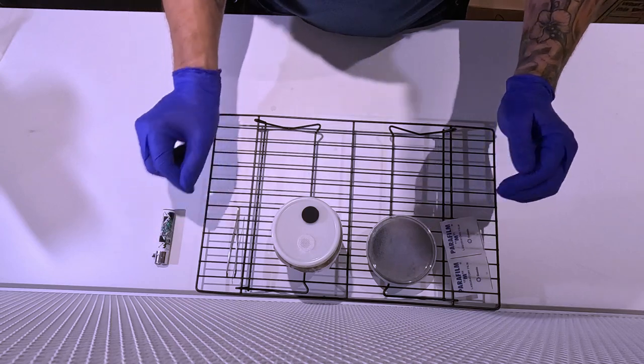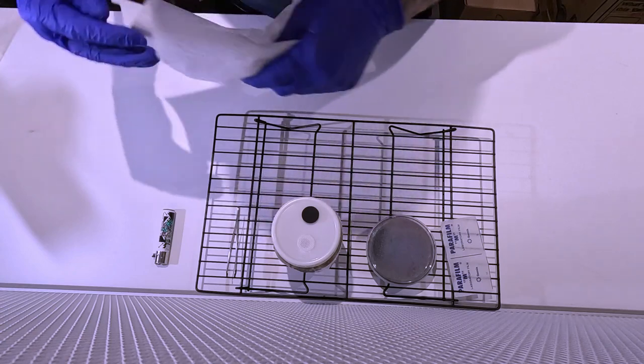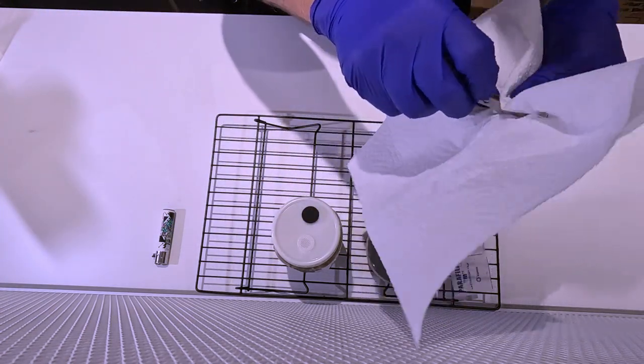We'll get some kitchen roll, wipe off the carbon that's left on the end of the tweezers. We don't want any of that on the grain.